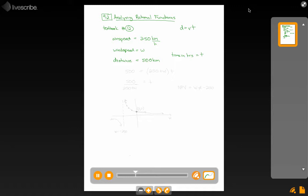So initially, I can say that 500 kilometers is equal to the speed that the plane travels relative to the ground, which is going to be 250 plus W times T. That's not too bad, because distance equals speed or velocity times time.